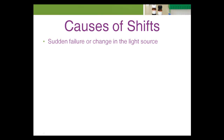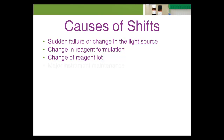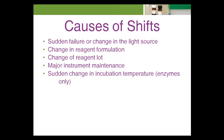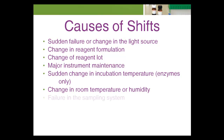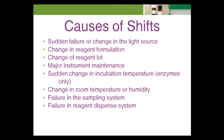Abrupt changes in the control mean are defined as shifts. Shifts in QC data represent a sudden and dramatic positive or negative change in test system performance. Shifts may be caused by sudden failure or change in the light source, change in reagent formulation, change of reagent lot, major instrument maintenance, sudden change in incubation temperature (enzymes only), change in room temperature or humidity, failure in the sampling system, failure in the reagent dispense system, or inaccurate calibration or recalibration.